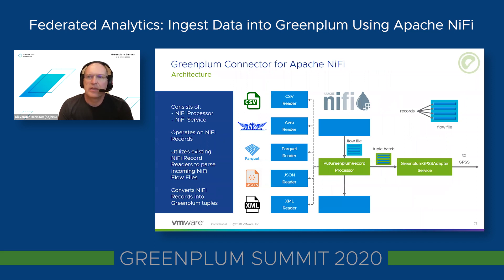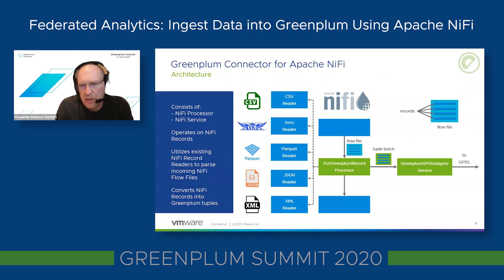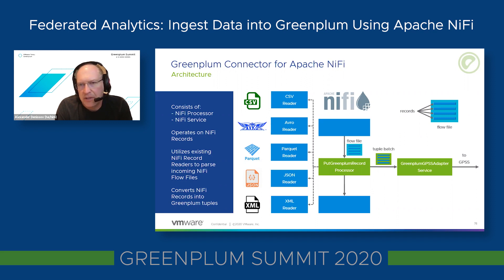Let's look at the architecture of this solution. The connector consists of two components. One component is called the PutGreenplumRecord processor, implemented as a NiFi processor. Another component is called the Greenplum GPSS adapter service, implemented using the NiFi service API. They operate on NiFi records — meaning the flow file moving through the system is assumed to be composed of individual records, which can be converted to database tuples and sent to Greenplum for ingestion.